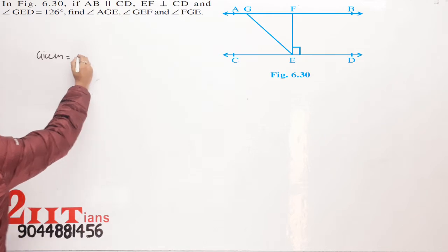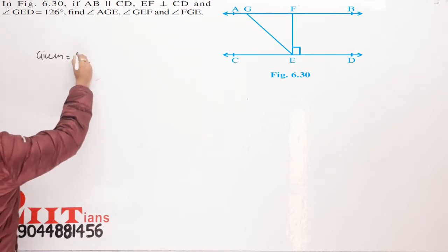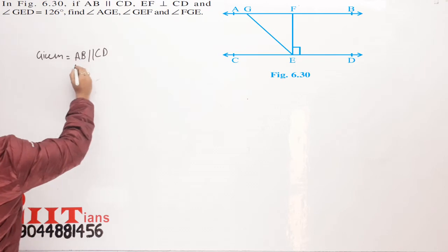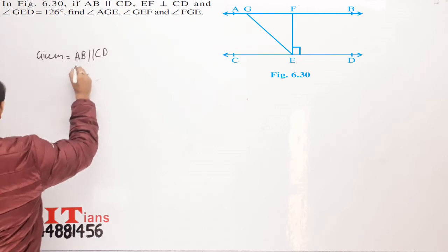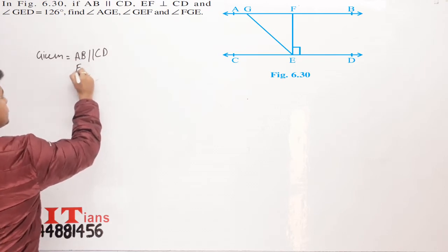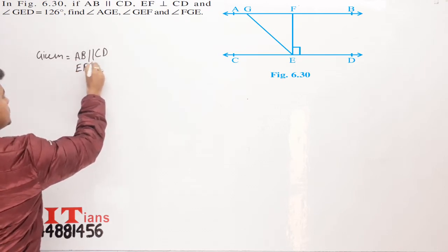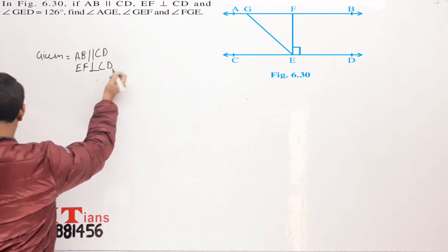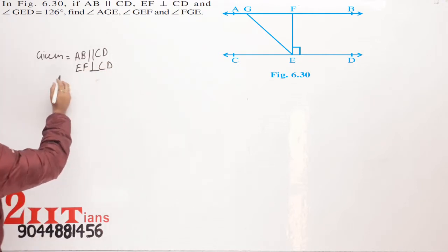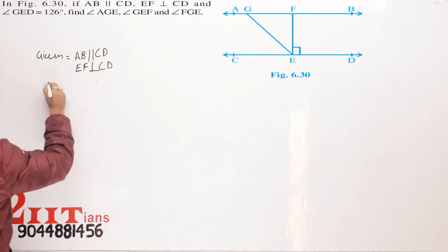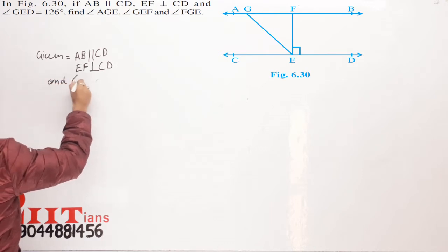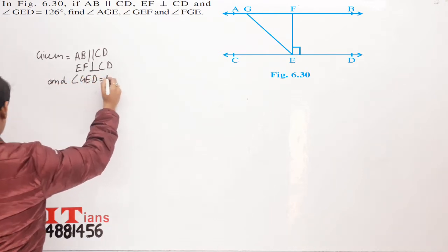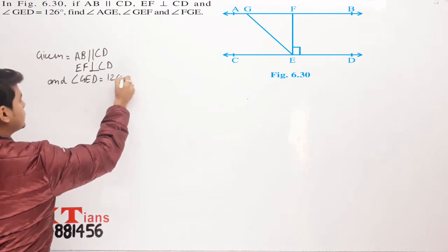Given: AB is parallel to CD. EF is perpendicular to CD. You can see the figure. And angle GED equals 126 degrees.